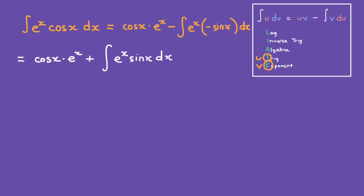We have to use integration by parts again. We have e to the power of x, which is the exponent, and then we have sine of x, which is trigonometry. So here u is going to be the trigonometry part — let's write this as u1. u1 is equal to sine of x.